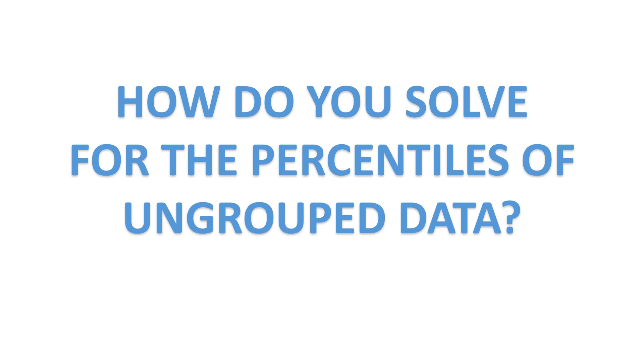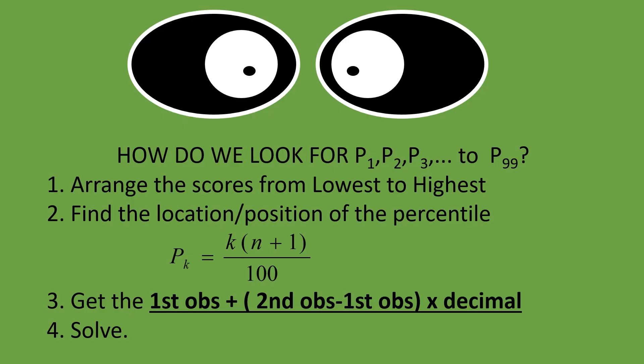How do you solve for the percentiles of ungrouped data? For Step 1, arrange the scores from lowest to highest. For Step 2, find the location or position of the percentile. The formula here is different for percentiles of ungrouped data.